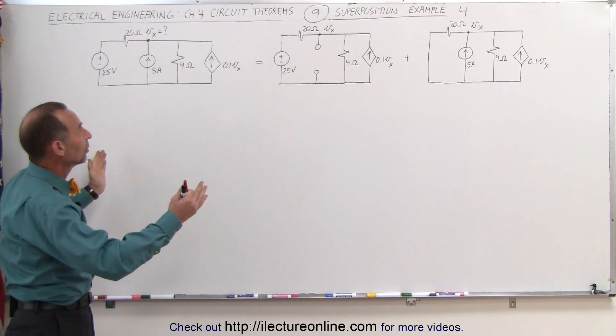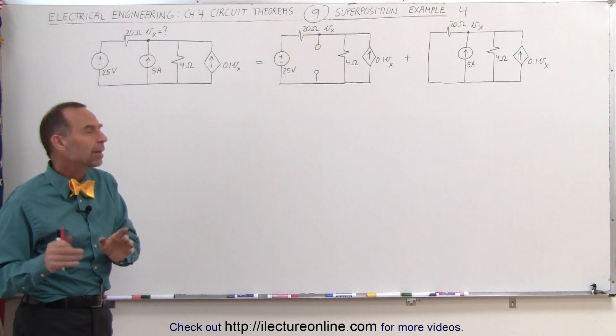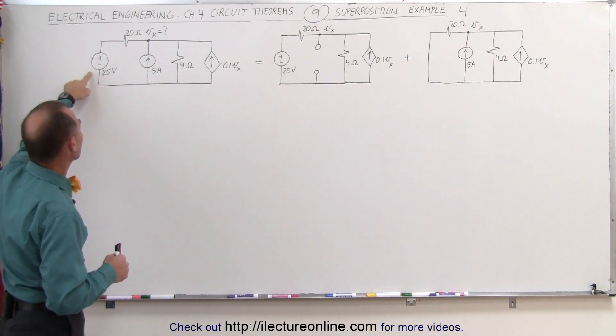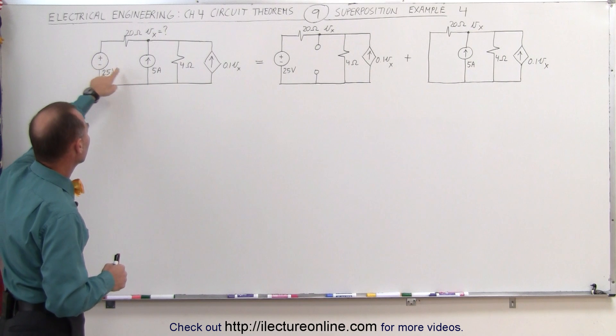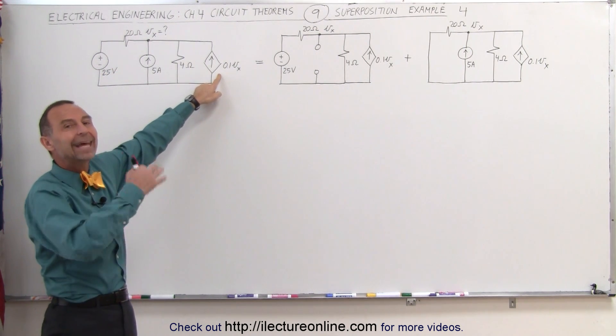We are going to separate the circuit into two separate circuits. Now you say, wait a minute, aren't there three sources? Well, there are two independent sources. There is a voltage source here, a current source there, but there's a dependent current source, so we cannot take that out. We have to leave that in in each of the circuits right there.